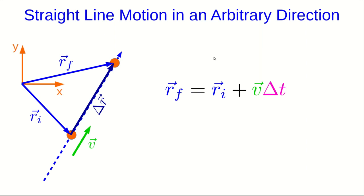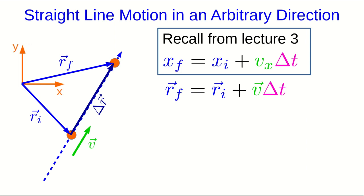The one remaining thing is that it would be nice to be able to write this in some other forms. Think back to lecture 3, where we saw this equation for motion at constant velocity along the x-axis. Now it looks an awful lot like the equation that we just got, and there's a good reason for that.